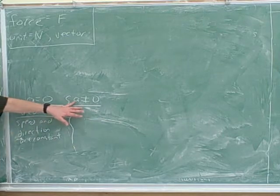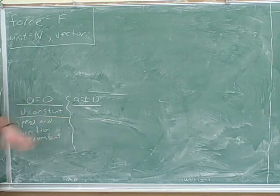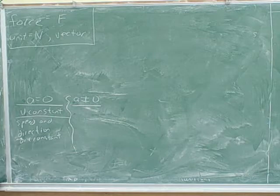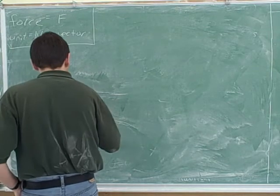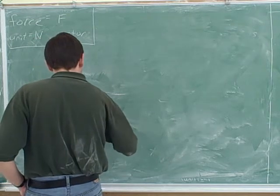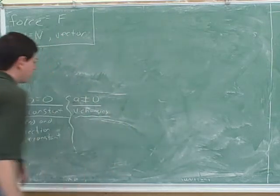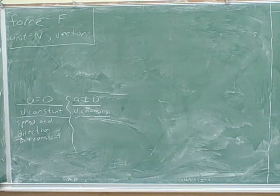On the other hand, suppose the acceleration is not zero. What does that tell you about the velocity? It's changing. Yeah. It doesn't tell you that the velocity is non-zero. It tells you that the velocity is changing. And what does that tell you about your speed and direction? They're changing.